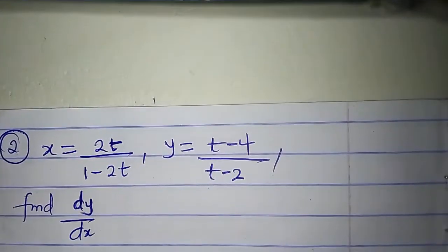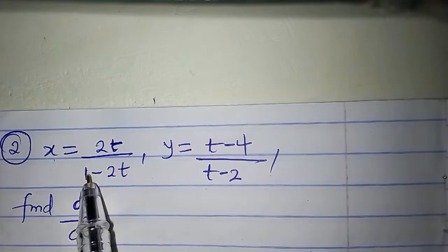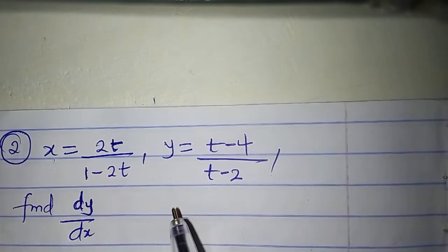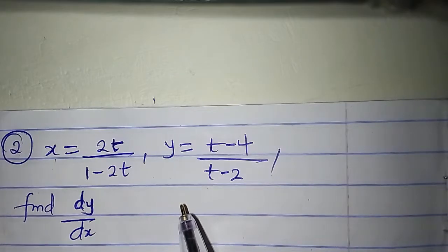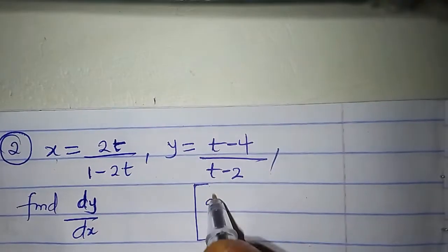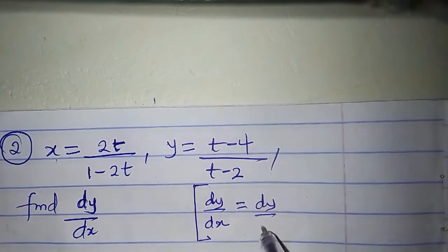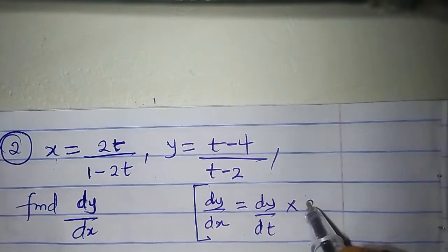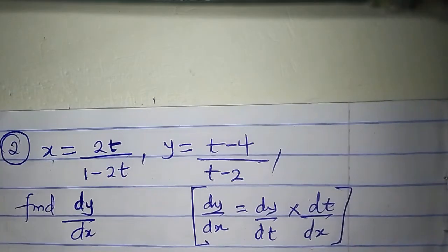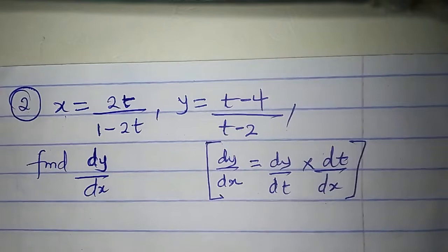Let us find dy/dx for a second example. x is equal to 2t all over 1 minus 2t, and y is equal to t minus 4 all over t minus 2. Based on the chain rule, dy/dx equals dy/dt times dt/dx, so we need dy/dt and dt/dx. Let us first get dy/dt.